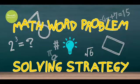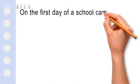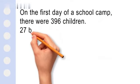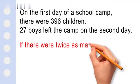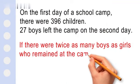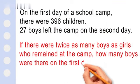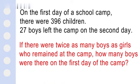Welcome, everybody. Let's do this question together. On the first day of a school camp, there were 396 children. 27 boys left the camp on the second day. If there were twice as many boys as girls who remained at the camp, how many boys were on the first day of camp?